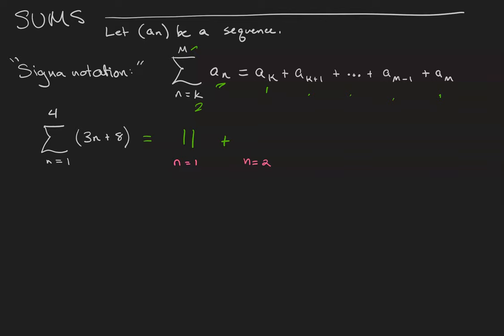If we substitute in a 2, then we get 3 times 2 is 6 plus 8 is 14. If we substitute in a 3, we get 3 times 3 makes 9 plus 8 is 17. And then when we plug in a 4, we get 20.